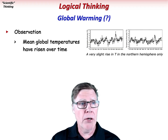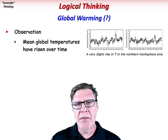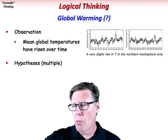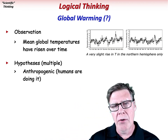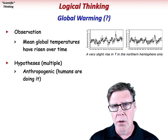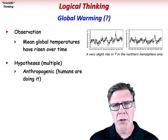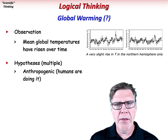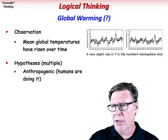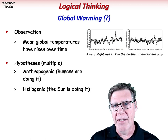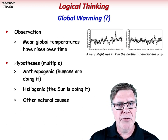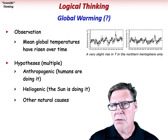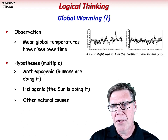What are the hypotheses that explain this warming trend? Well, there are several, but you only hear about one: anthropogenic global warming, or human-caused global warming — so humans are the reason. But there are other possibilities as well. It could be the sun — heliogenic global warming — or it could be other natural causes that we're not really aware of. So we need to test these hypotheses, but how do we do that?